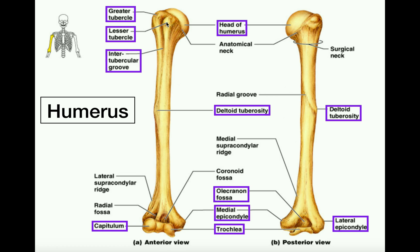Also, if you look at where the lesser tubercle is, it's a little bit beneath the greater tubercle if we're standing in perfect anatomical position. Now the intertubercular groove — that implies we have a groove between the two tubercles. So if we find the greater tubercle and the lesser tubercle, this groove that kind of runs between them, which extends about down this far, that's the intertubercular groove.